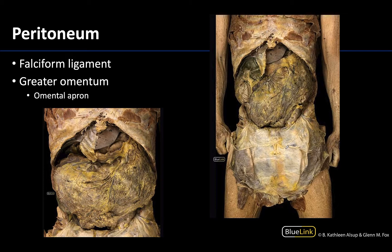In order to reflect the anterior abdominal wall, you have to release the attachment of the falciform ligament from the anterior abdominal wall. That falciform ligament attaches the liver to the anterior abdominal wall, so when the wall is reflected it is most easily observable for the parts still attached to the liver. You can see a little bit of the liver here, and all of this is considered part of the falciform ligament. It's fairly obvious — it's located between the right and left lobes of the liver, so it'll likely be one of the easier things to locate.